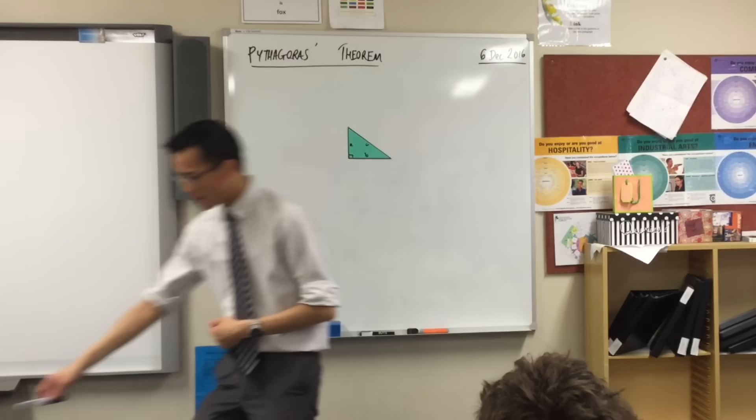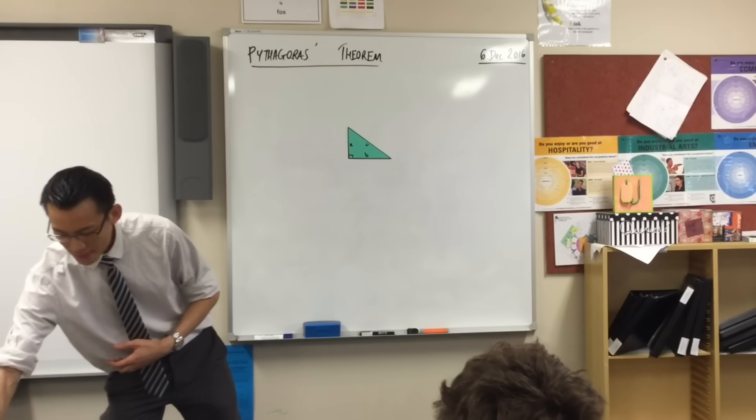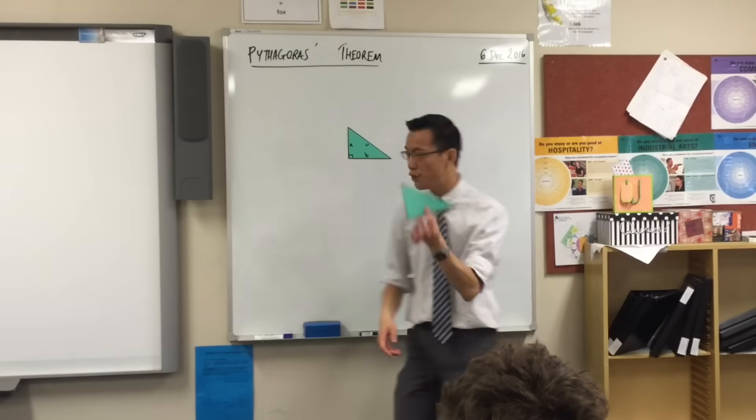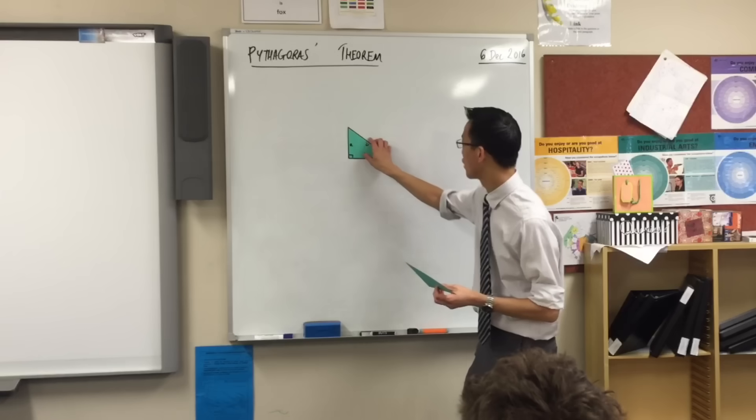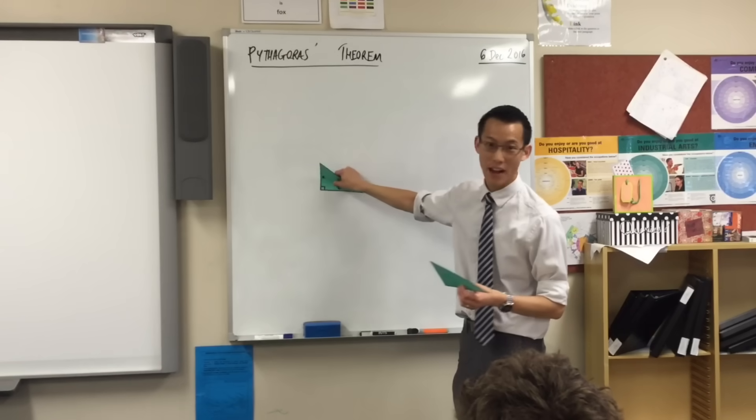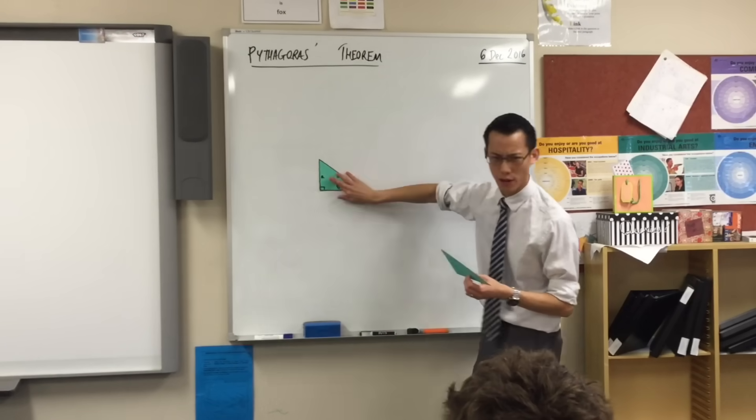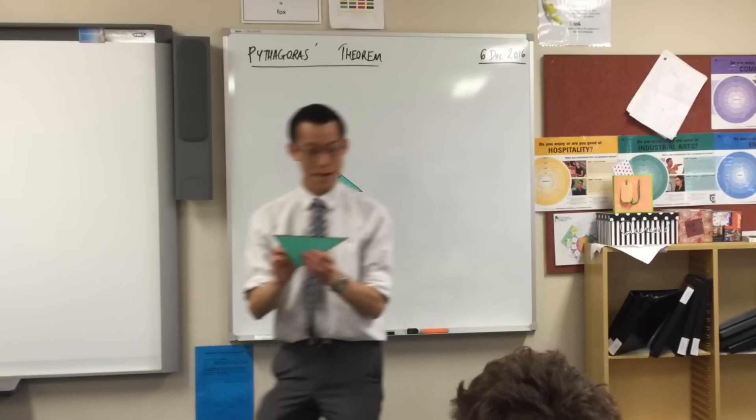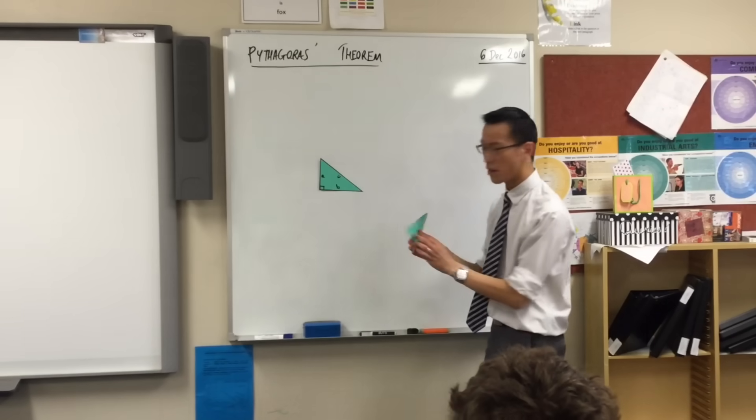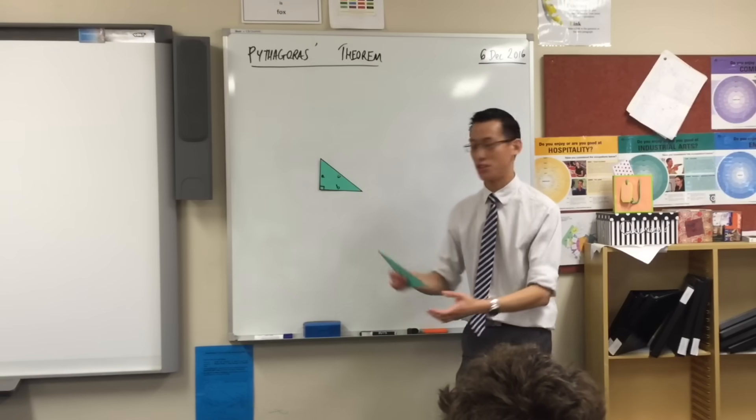Now, A, B, and C, they're the three sides of this triangle. And what I'm going to do is put a few more copies of this same triangle up on the board so that I can make a bit of a construction, a bit of a shape. So all of these triangles are the same. I've got four of them.